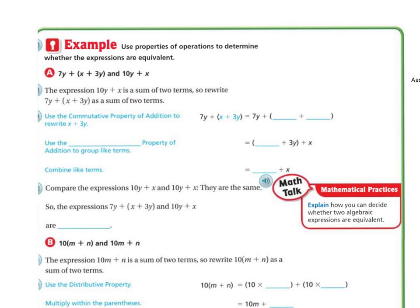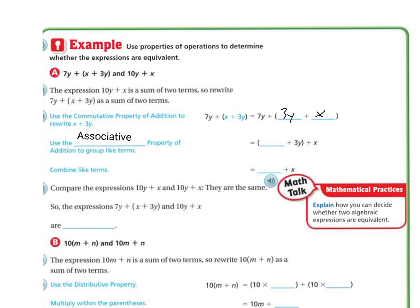If you use the Commutative Property of Addition to rewrite them, you would get 7y plus x plus 3y, or 7y plus 3y plus x. If you use the Associative Property to group your like terms, you would combine the like terms, which is the 7y and the 3y. So we're combining these two terms, and then we'd have plus the x. So 7y plus 3y is 10y plus x.